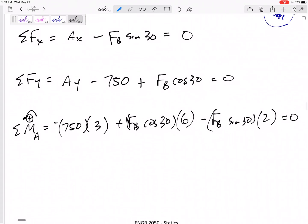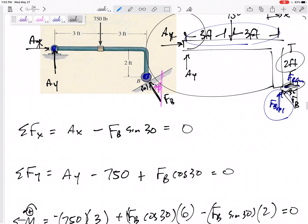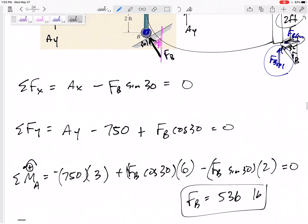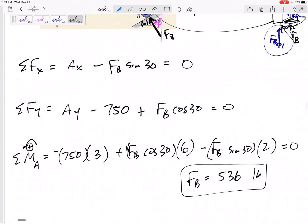Set that equals zero and I can solve for Fb. Fb, I've got 536 pounds. That one should not come out negative because I know that it can only be pushing, it can't be pulling on that roller.